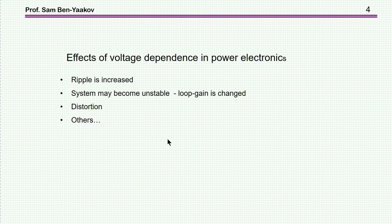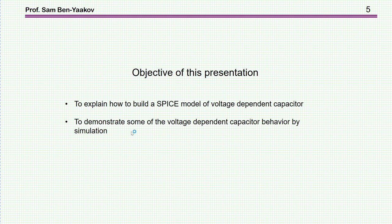What's the effect of a voltage dependence capacitor in power electronic circuits? First of all, it will increase the ripple because many times they use the capacitor for filtering. If the capacitance is dropping, then the ripple will be increased. The system may become unstable because the loop gain is changing. In some cases, if you are close to instability, you may have a problem. You can get distortion and there are some other effects that you might expect.